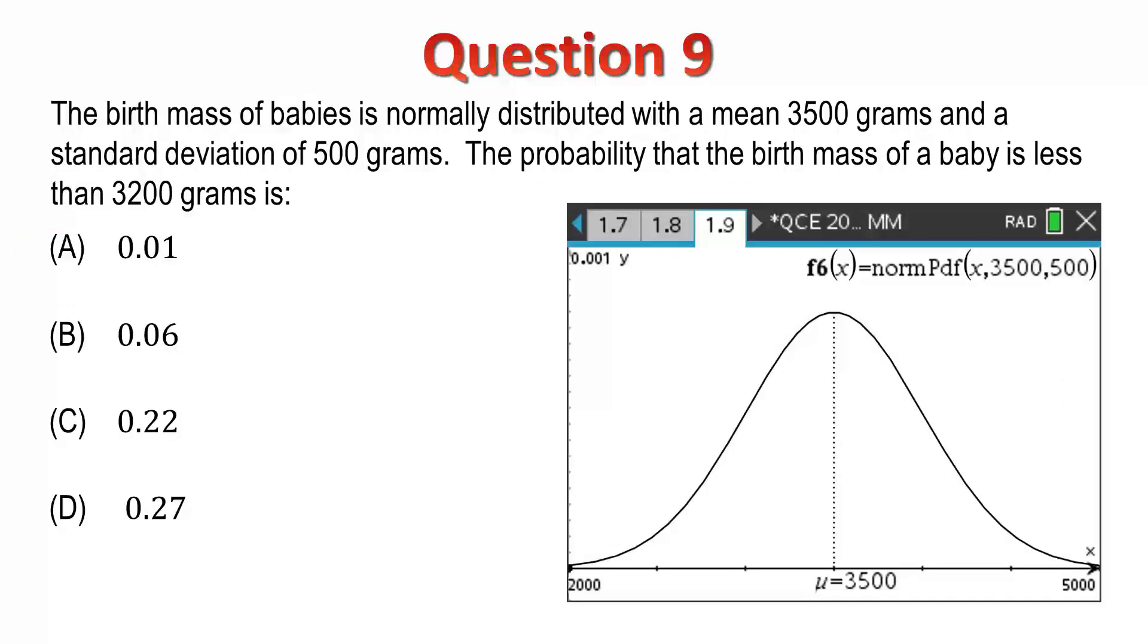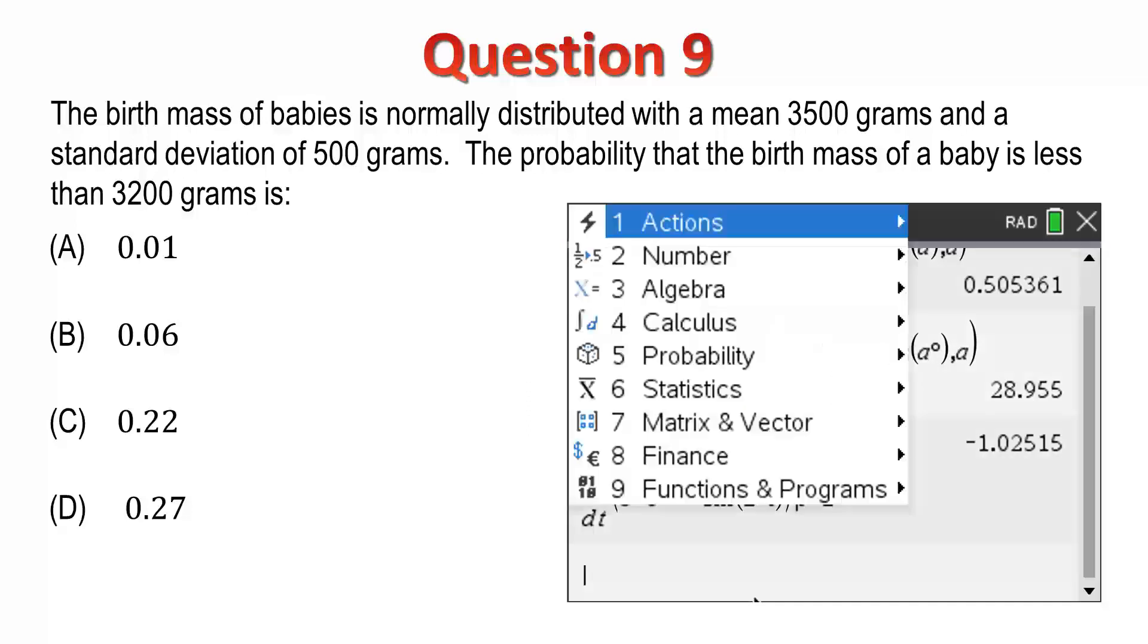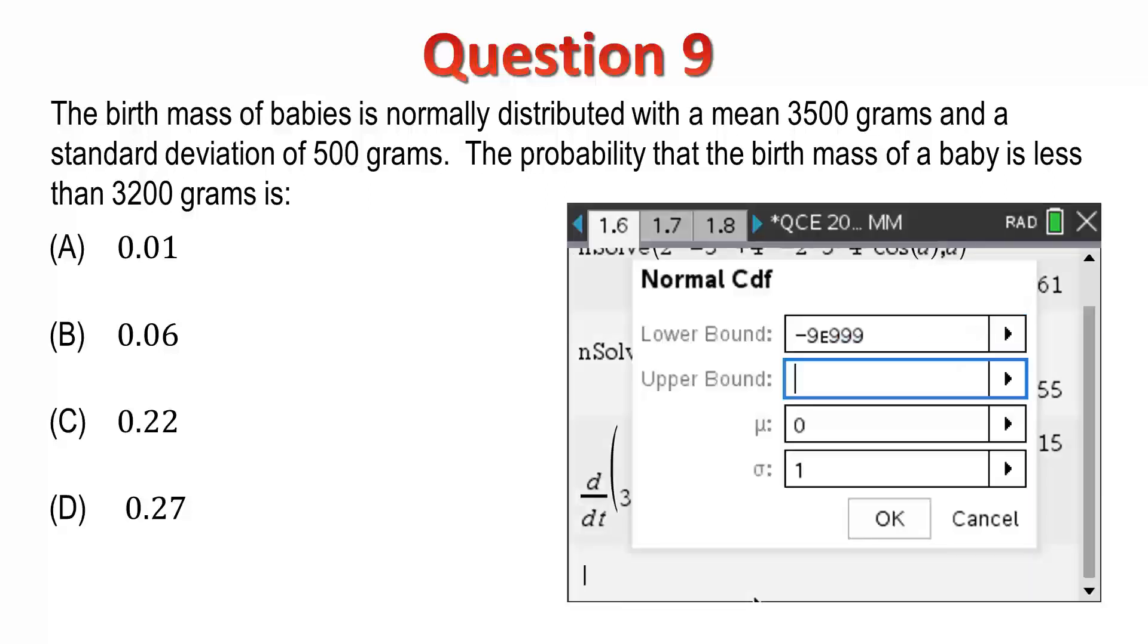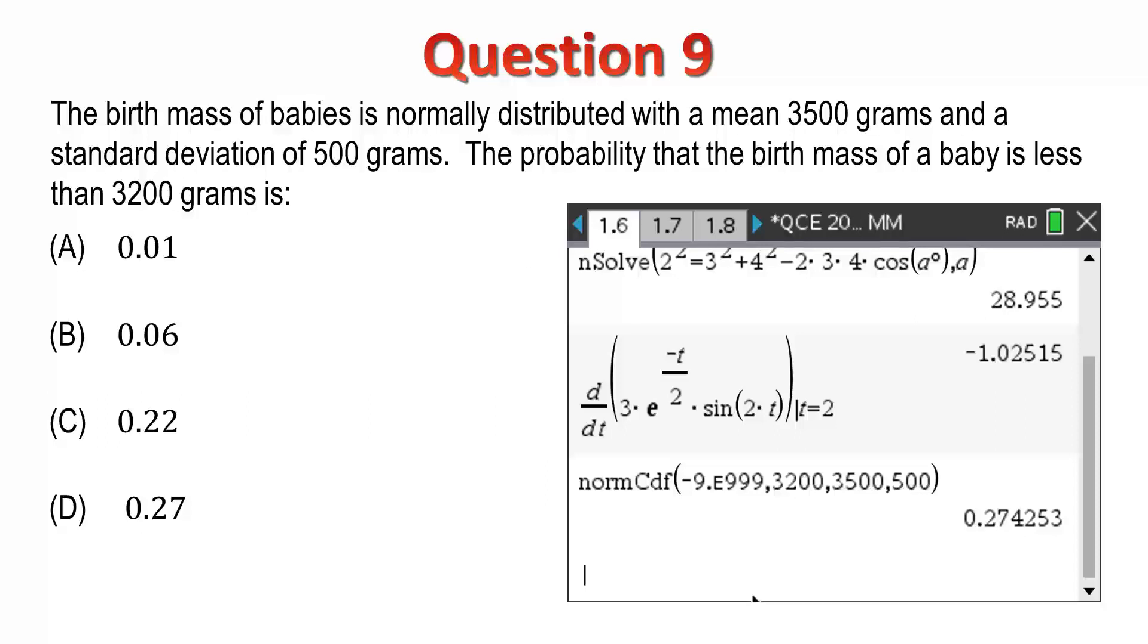Question 9. The birth mass of babies is normally distributed with a mean of 3,500 grams and a standard deviation of 500. We're required to find the probability that the birth mass of a baby is less than 3,200 grams. We can see our normal distribution and the red shaded area corresponds to the area that we require. We'll just use our probability menu and normal CDF cumulative density function and we'll go from essentially negative infinity up to 3,200, a mean of 3,500, a standard deviation of 500 and we get the answer 0.27 which is option D.